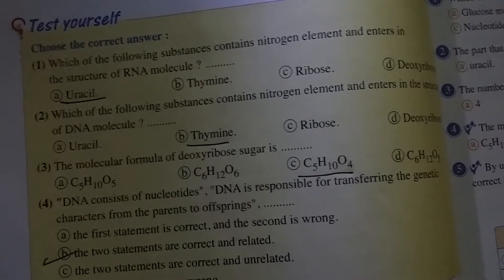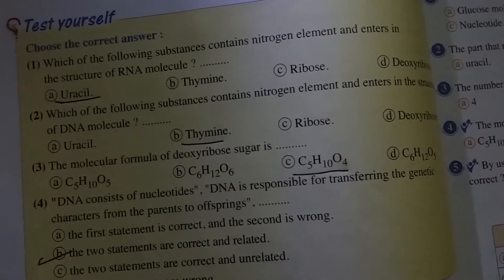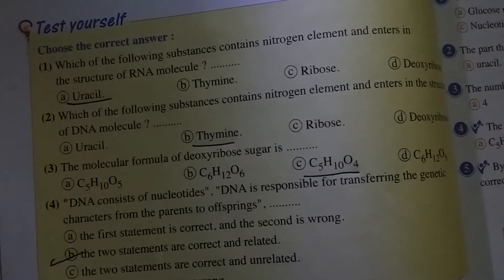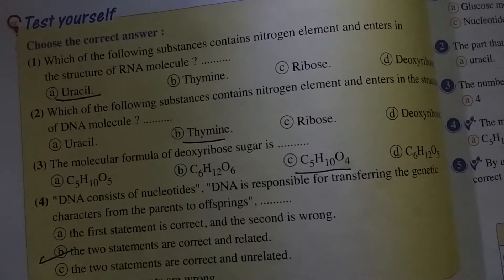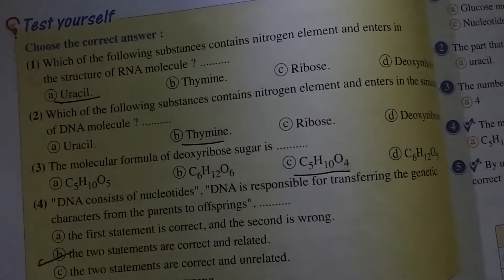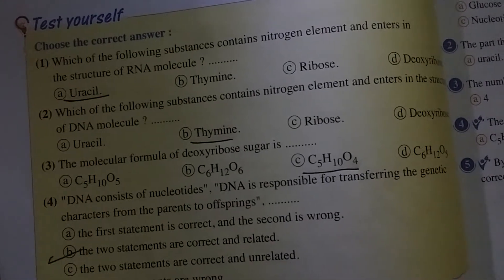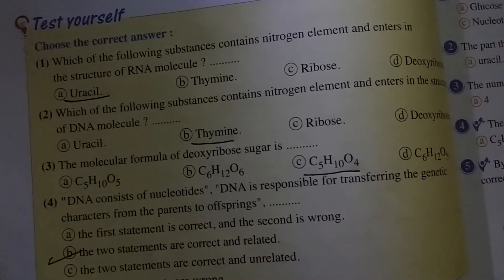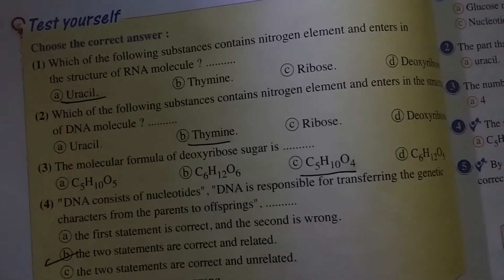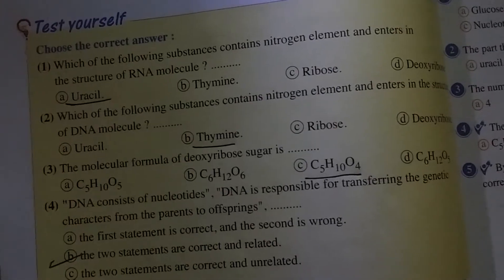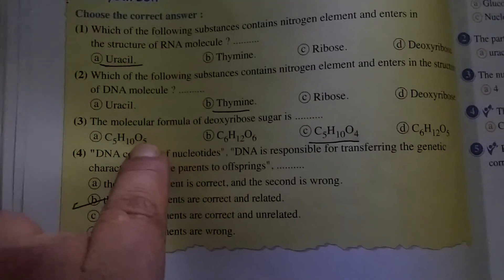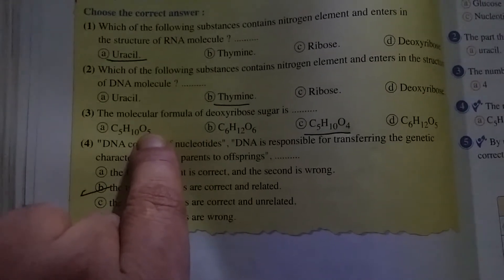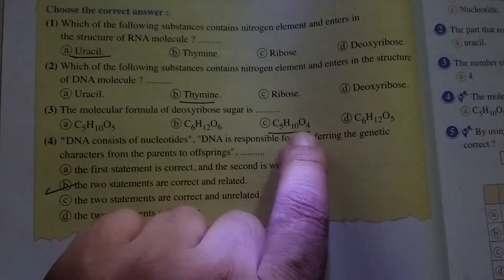Question: The molecular formula of deoxyribose sugar. Because it is a ribose, it contains five carbon atoms. The answer is C5. However, since it is called deoxy, it has one fewer oxygen atom — so five oxygen atoms of ribose minus one equals four oxygen atoms in deoxyribose.